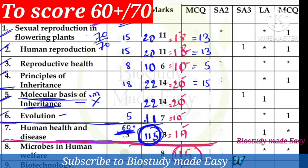What are the important topics for human health and diseases? It is a high-scoring chapter. I will talk to you about it next. You have 70 marks total; we have the guide marks. Total is 60 marks.